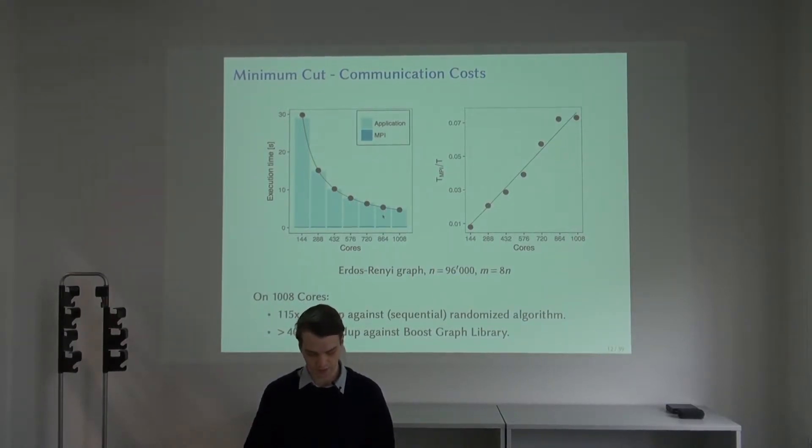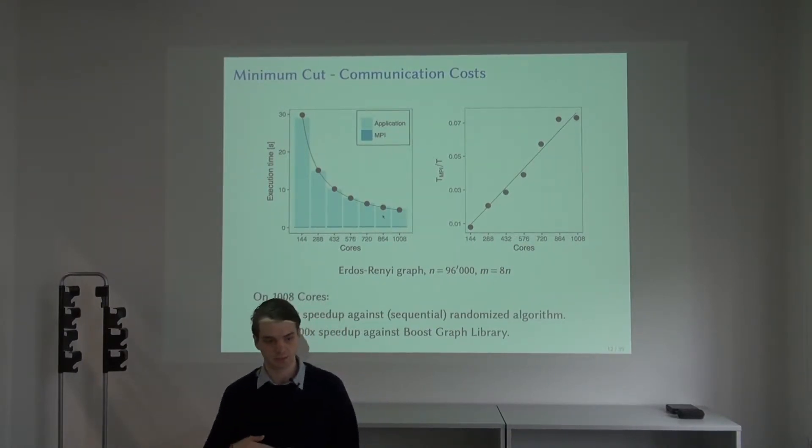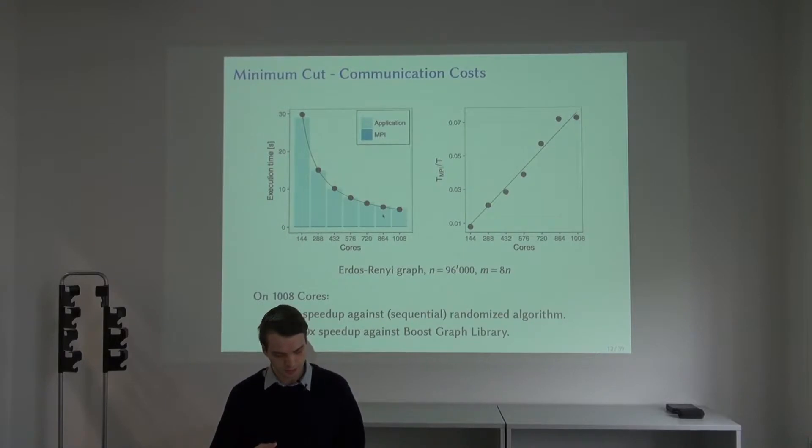We also compared our algorithm to two sequential baselines. We were unable to find any parallel implementations for the minimum cut problem, so we compared to two sequential ones. We started with the boost graph library's implementation which turned out to be very slow. We beat the boost graph library even sequentially, which mostly comes from the fact that they use a different algorithm which has worse complexity.